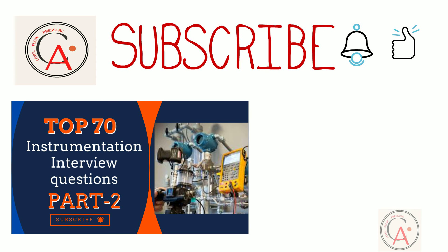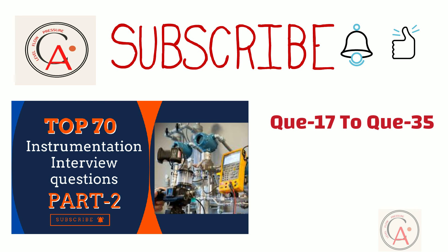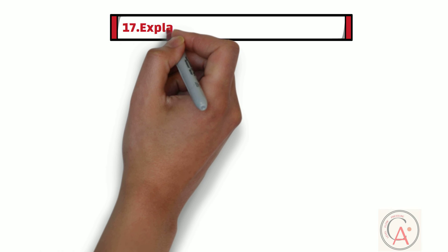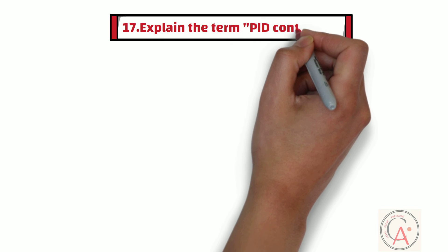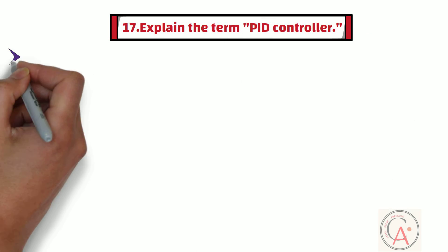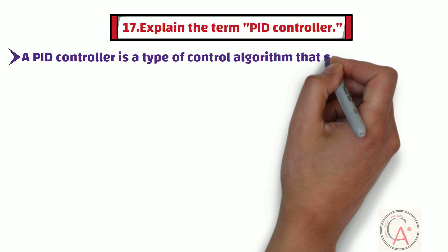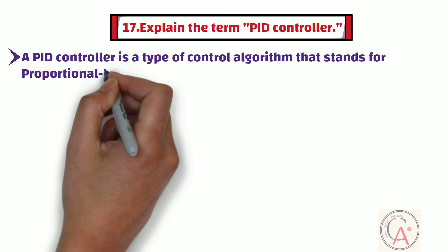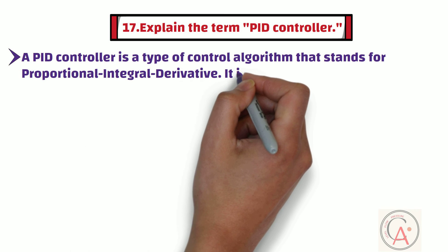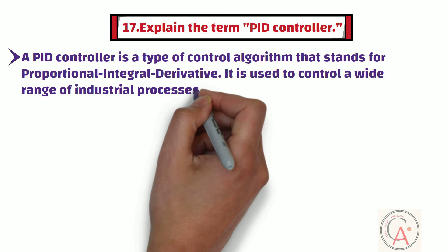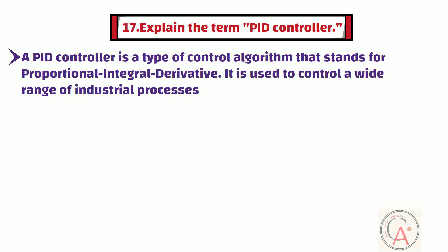In this second part of the video, I will cover question number 17 to 35. The 17th question is: explain the term PID controller. A PID controller is a type of control algorithm that stands for Proportional Integral Derivative. It is used to control a wide range of industrial processes.